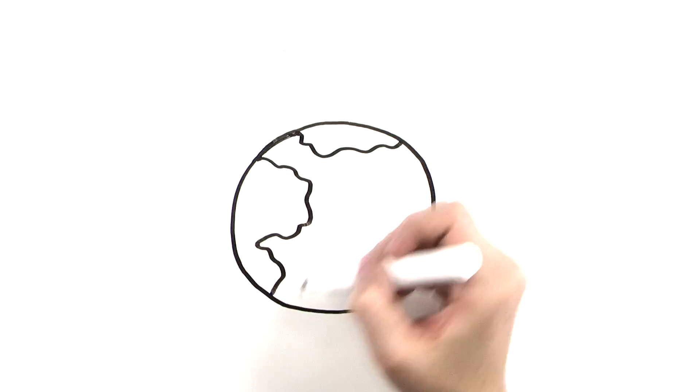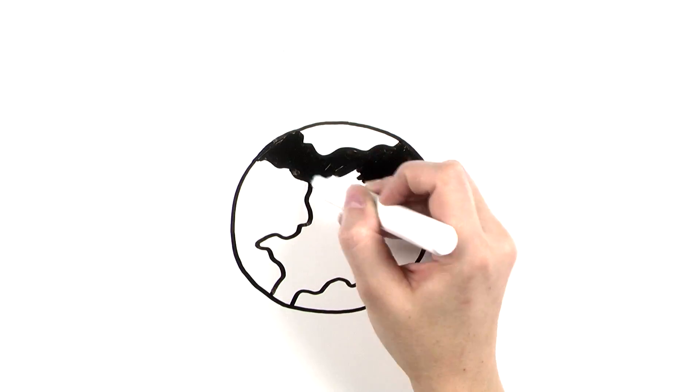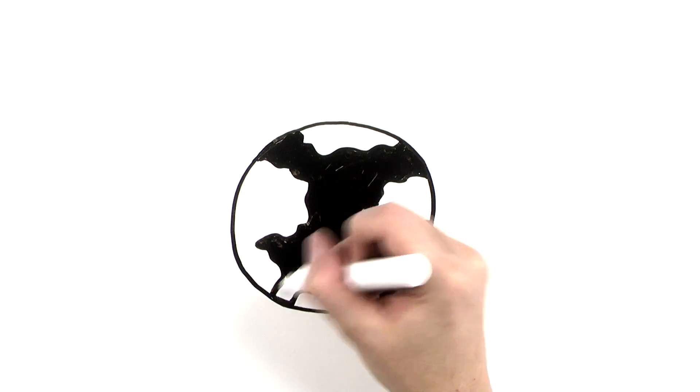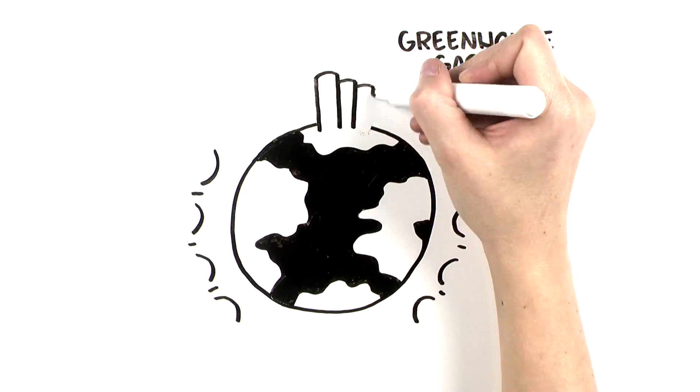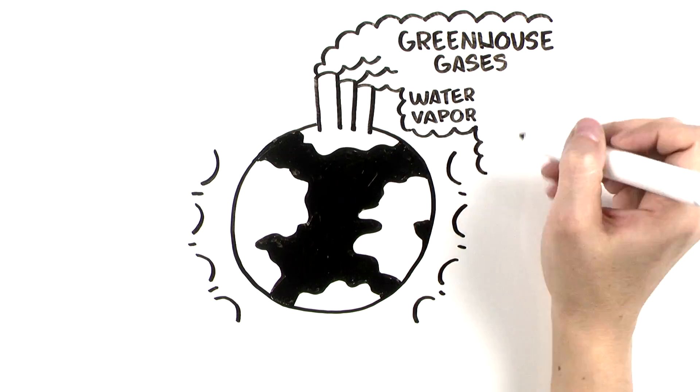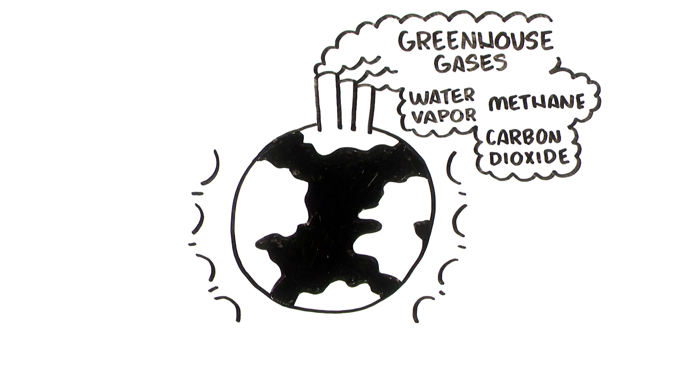When regulating the Earth's temperature and climate, two forces treat the radiation coming from the sun in very different ways. One of the forces is greenhouse gases produced naturally and by burning fossil fuels.